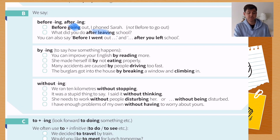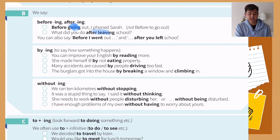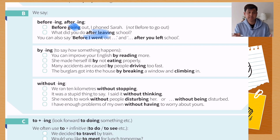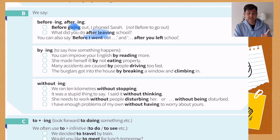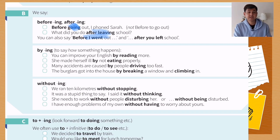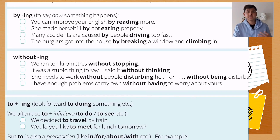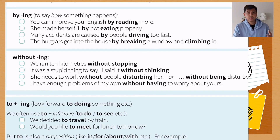But you have another possibility: you can simply use past simple tense. For example, for the first sentence you can say 'Before I went out, I phoned Sarah' — because it's in the past, we can use past tense as well, or you can use 'before' plus 'going.' For the second one, you can say 'What did you do after leaving school?' or simply 'What did you do after you left school?' — 'left' is past simple tense. And then 'by' is also followed by -ing to say how something happens, to explain or describe how something happens.